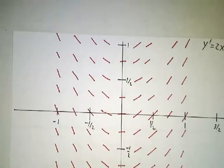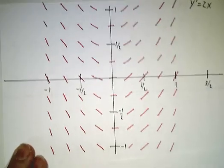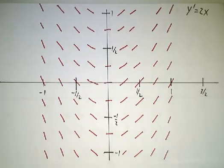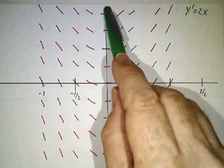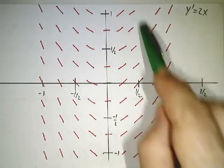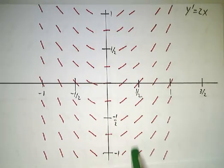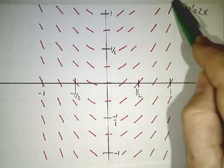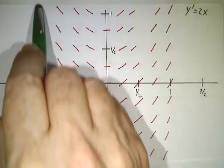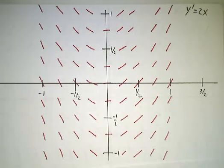Let's look at a couple more examples. The first example, which I've drawn in advance since it takes too long to do in real time, is y' equals 2x. When x equals 0, the slope is 0. When x equals 1/2, the slope is 1. When x equals 1, the slope is 2. When x equals negative 1, the slope is negative 2.